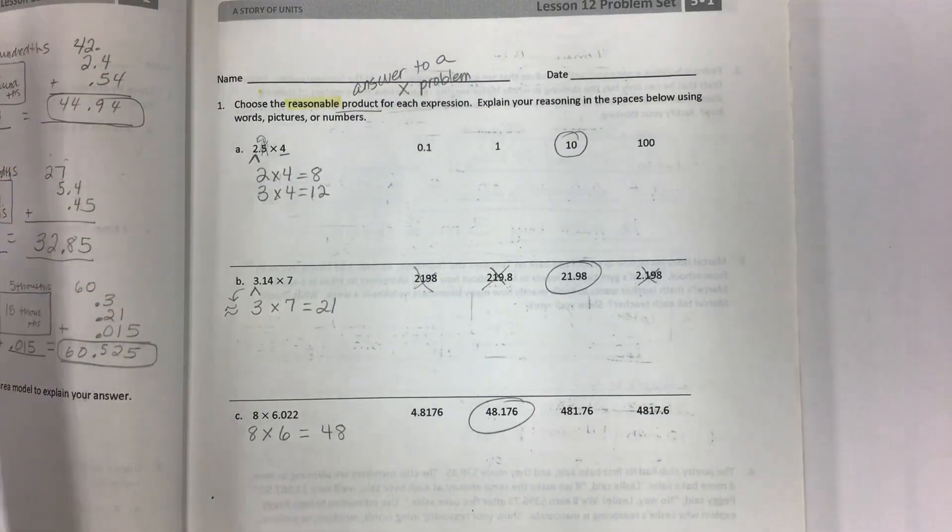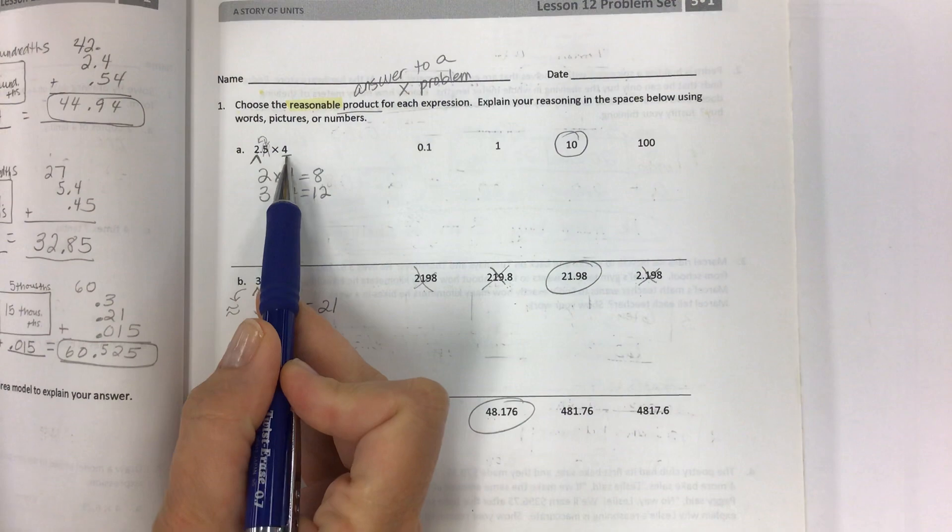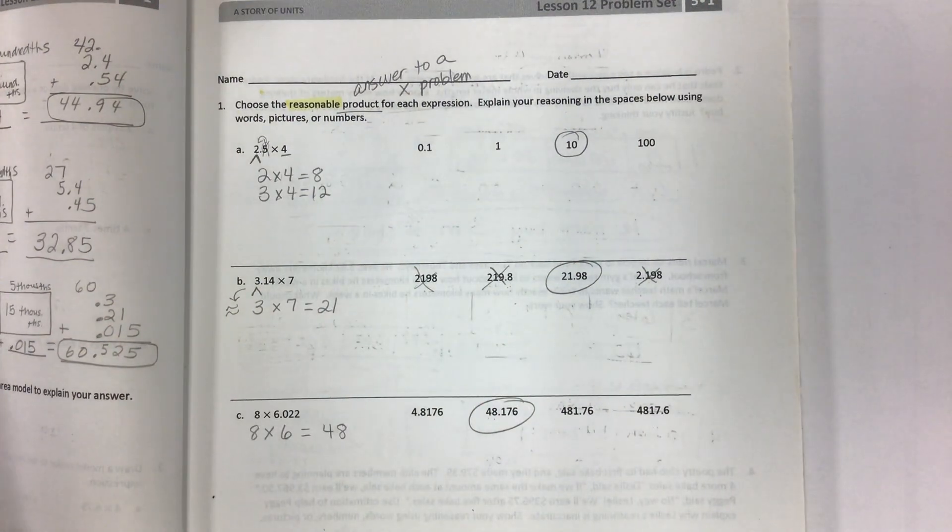Hi kids! Today we're doing lesson 12 in Eureka Math and the objective is to multiply a decimal fraction by a single digit whole number, like this - decimal fraction and single digit whole number, including using estimation to confirm the placement of the decimal point. So really what you're trying to do here is not pay too much attention to the decimal fraction, really look at the whole numbers, see where that will get you, and then guess the number that is closest.